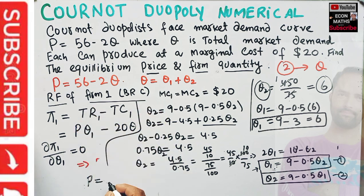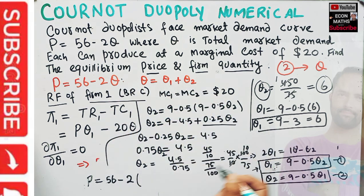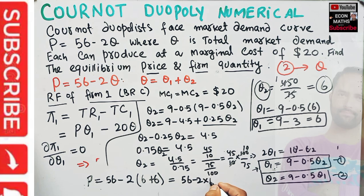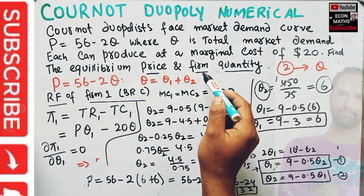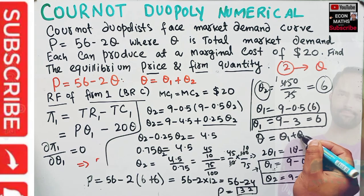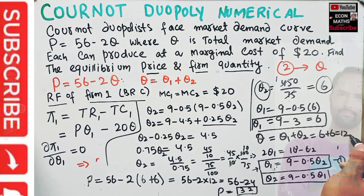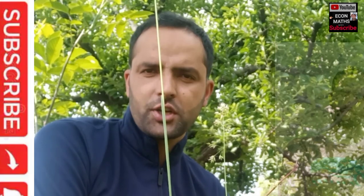The equilibrium price is found using the demand function: P = 56 - 2·Q, where Q = Q1 + Q2 = 6 + 6 = 12. So P = 56 - 2·(12) = 56 - 24 = 32. The equilibrium price in the market is 32, each firm produces a quantity of 6, and the total quantity produced is Q1 + Q2 = 12. For more videos on mathematical economics, please subscribe, like, comment, and share.